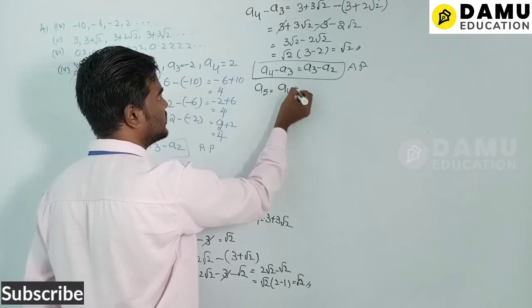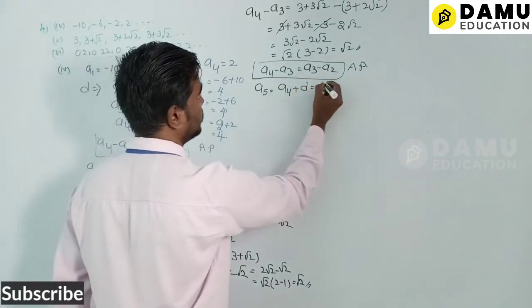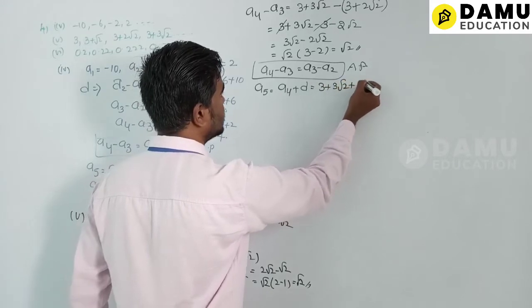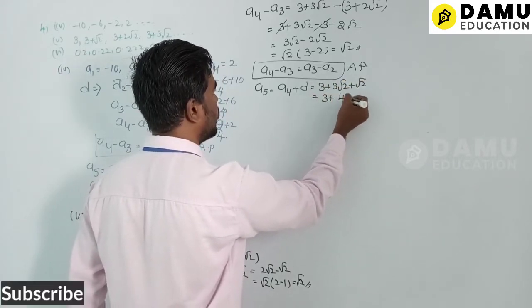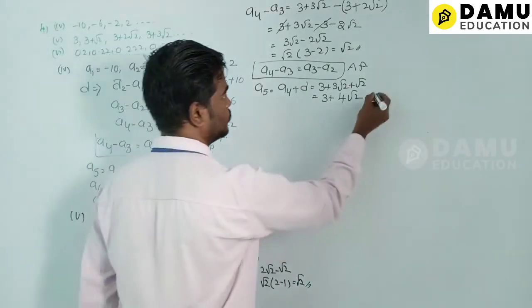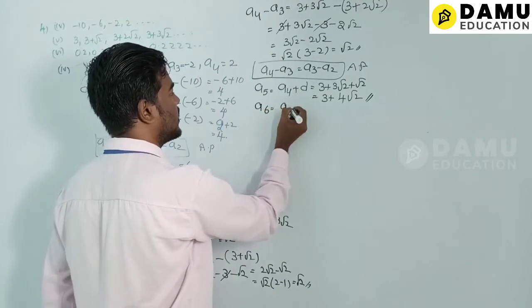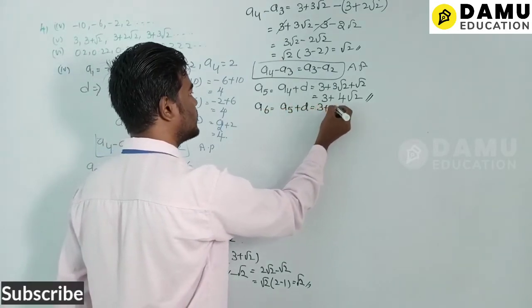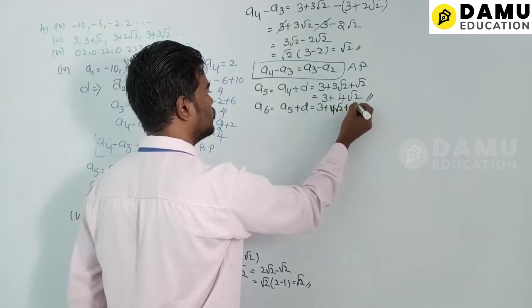Now a5 = a4 + d = (3 + 3√2) + √2 = 3 + 4√2. Then a6 = a5 + d = (3 + 4√2) + √2 = 3 + 5√2.